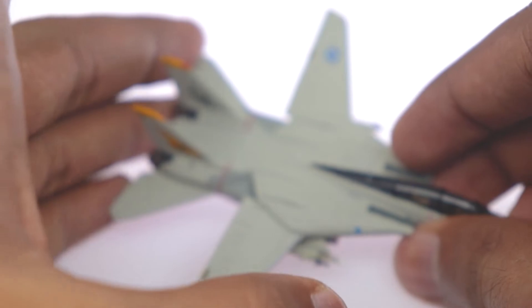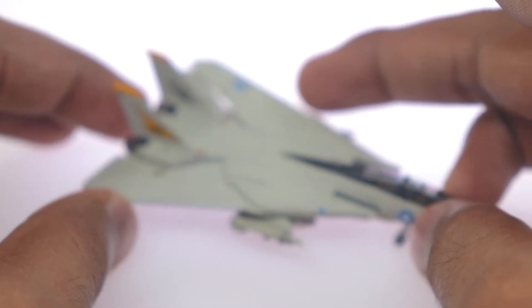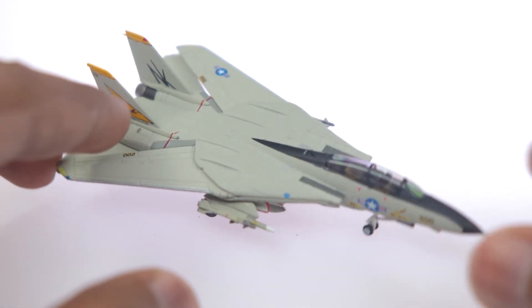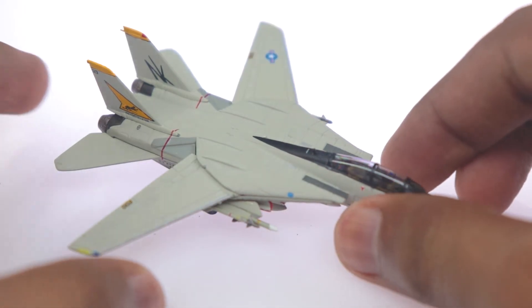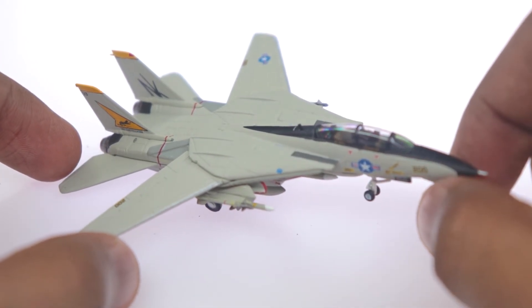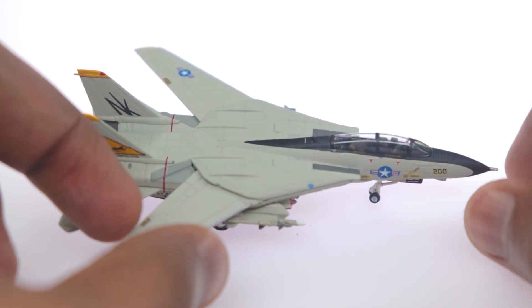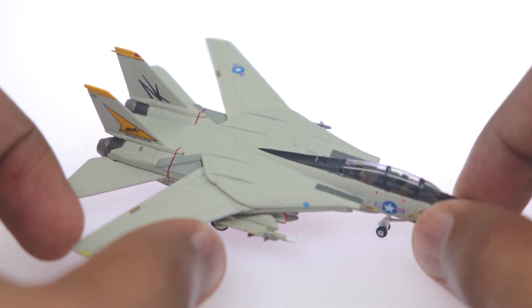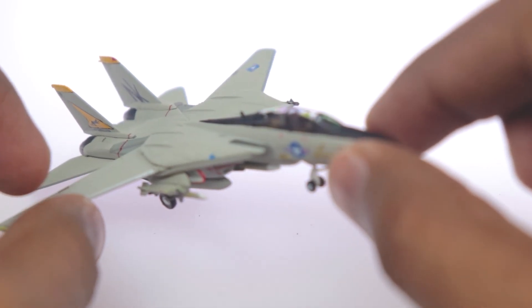So there it is guys the 1-200 scale F-14 by Hogan Wings and pretty nice detailed model and for the price and the size of this aircraft I don't think there is much we can add to it. So thanks for watching this video guys. Please like, subscribe and share and I will see you all in the next video.